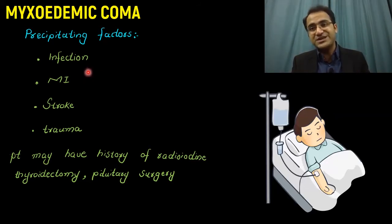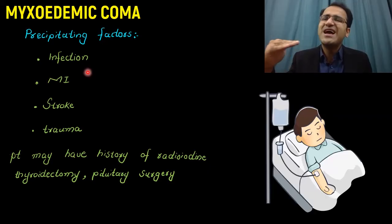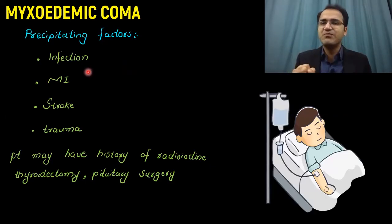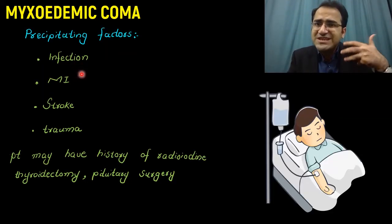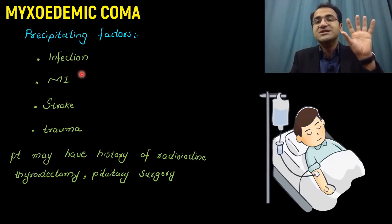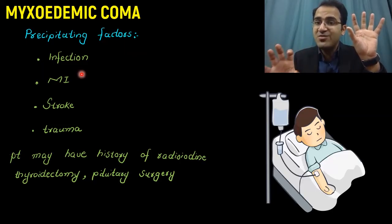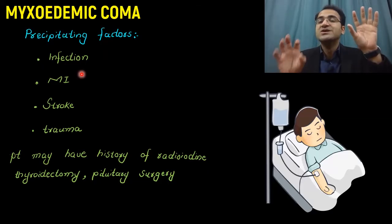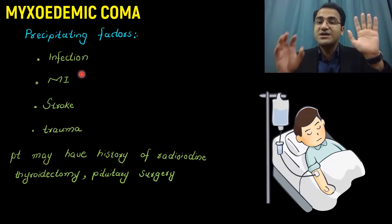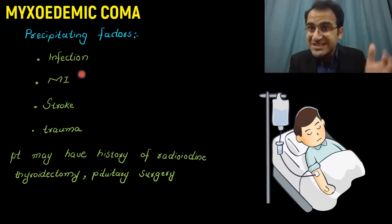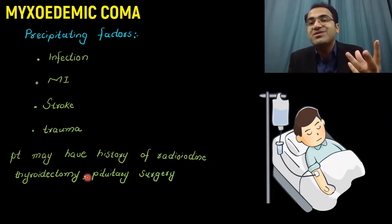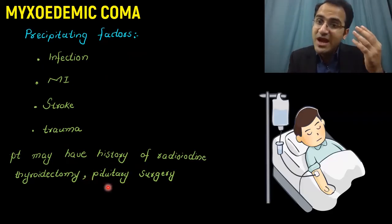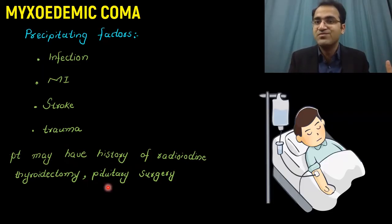What are the precipitating factors? Since these patients are already known hypothyroid patients with a baseline disease, what triggers decompensation? These patients get infected, get an MI, stroke, trauma — any stressful situation that demands high levels of thyroid hormones, but their body is unable to produce them, leading to metabolic shutdown. These patients might have a history of radioiodine thyroidectomy, or may have gone through pituitary surgery as a secondary cause of hypothyroidism — important points to take in the history.